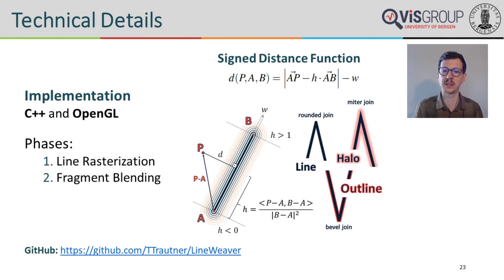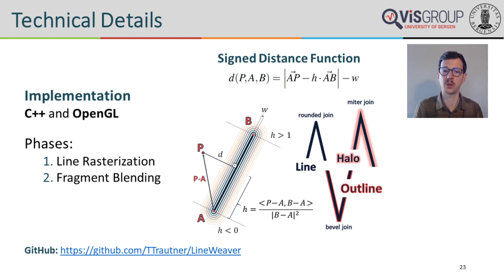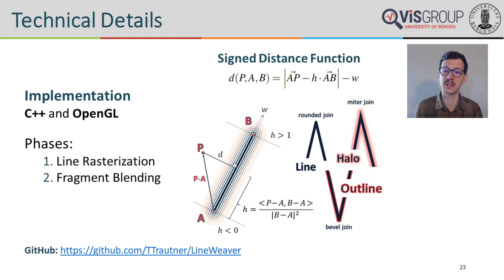Our approach was implemented in C++ and OpenGL, and the complete source code is available on GitHub. It consists of two phases. During line rasterization, we upload the X and Y coordinates and the importance per tuple to the GPU. Based on the desired line thickness, we construct a triangle strip that allows us to interpret each line using an assigned distance function. Together with the importance value, each contribution is then added to a per-pixel linked list. During fragment blending, we sort the linked list based on importance and then use the blending operator to determine the final pixel color.